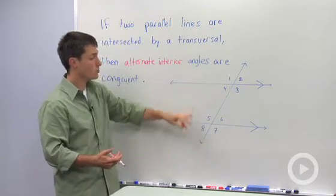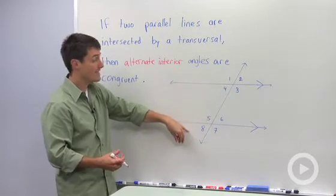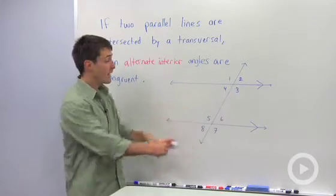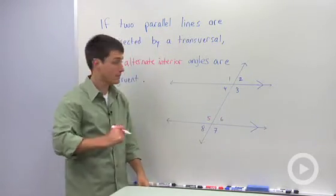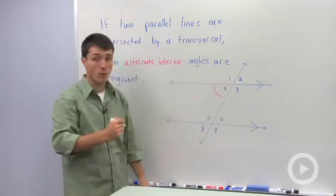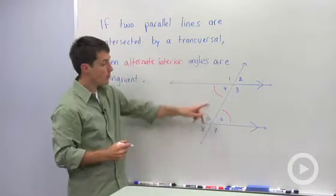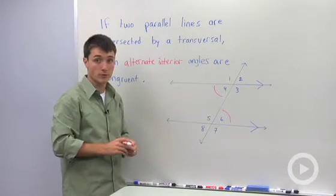So here we have our two parallel lines. Our alternate interior angles are going to be the angles that are inside and on opposite sides of the transversal. So angle four is inside, and its opposite side would be six. So those two angles will be congruent.